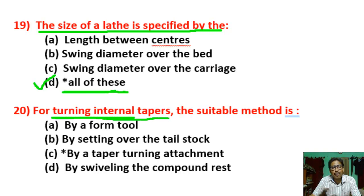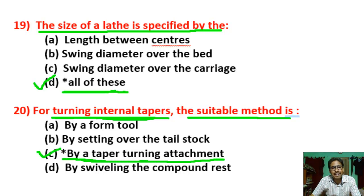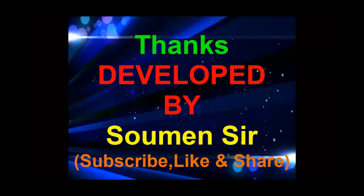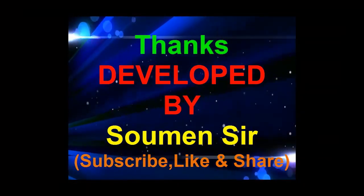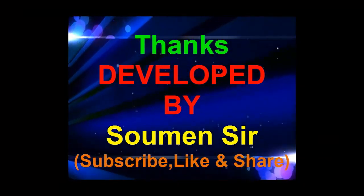Question number twenty: for turning an internal taper in a job, the suitable method is — correct answer is C, by a taper turning attachment method. Thank you.